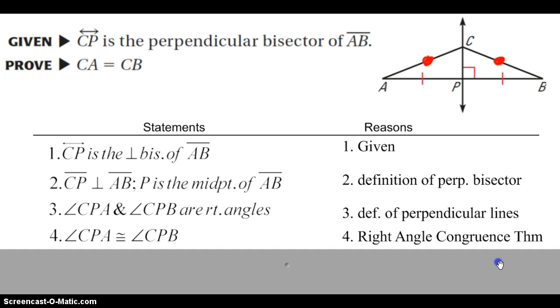And by the right angle congruence theorem, all right angles are congruent. So angle CPA is congruent to angle CPB. That was using our perpendicular line piece.